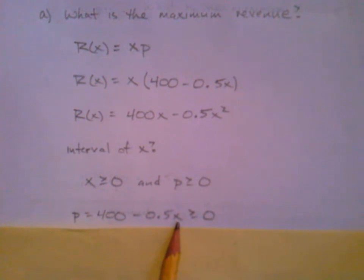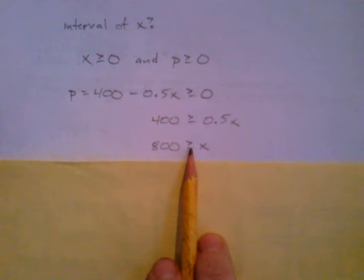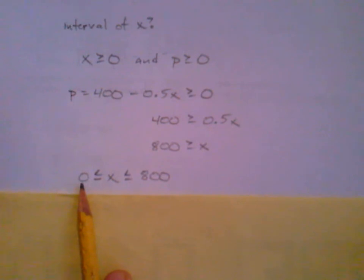Because if we produce too many cameras, then in theory our price will go negative in order to sell them all. So we're going to solve this thing for x. If I add that over there and divide by 0.5, then I know 800 is greater than or equal to x. In other words, x is less than or equal to 800. I know that x has got to be somewhere between 0 and 800. I have to at least make 0 cameras, and I can't charge more than 800 or else my price goes negative.